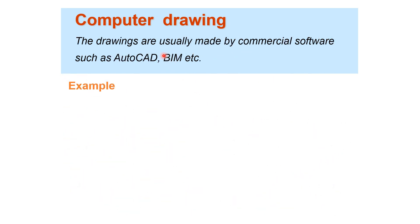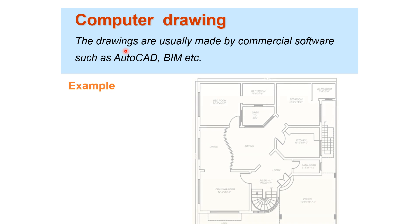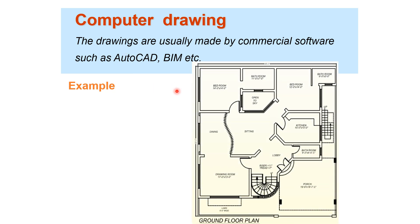Computer drawing: drawings are usually made by commercial software such as AutoCAD, Chief Architect, SketchUp, BIM, etc. Here is a map of a house showing bedroom, bedroom, bedroom, dining room, sitting room, kitchen, drawing room, and porch. Even larger drawings than this can be made with computer drawing.